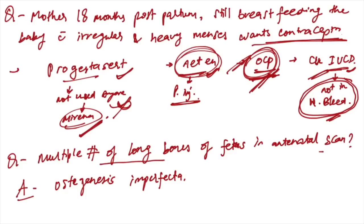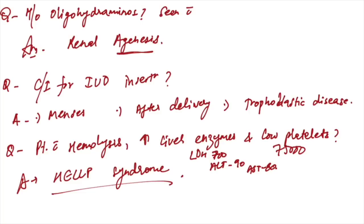Multiple fractures of long bones in fetus on antenatal scan - diagnosis is osteogenesis imperfecta. Multiple fractures can be detected in antenatal scan. History of oligohydramnios is seen with renal agenesis.